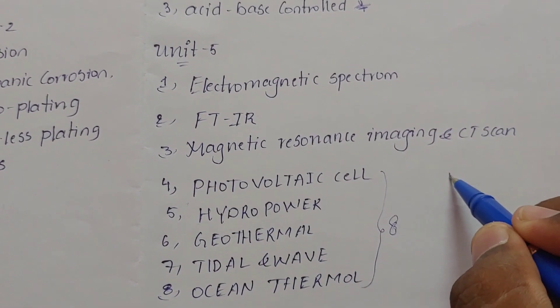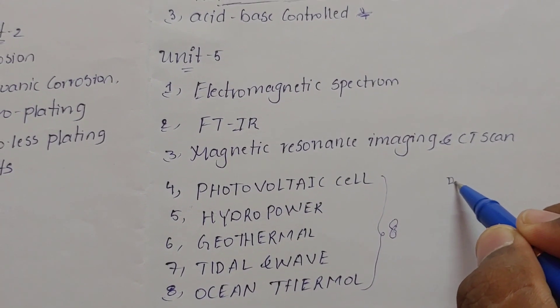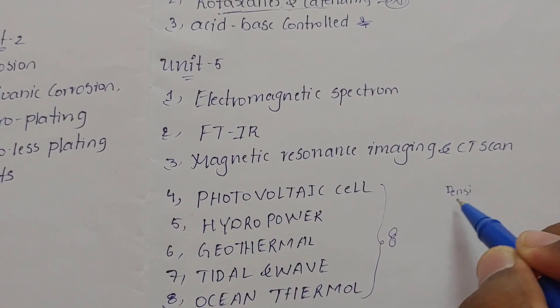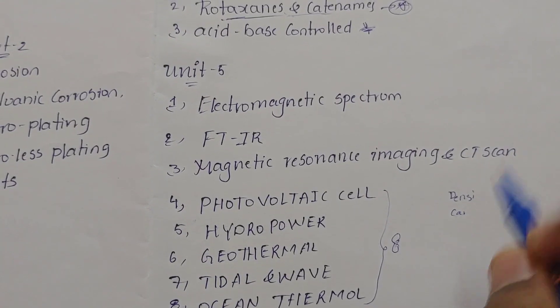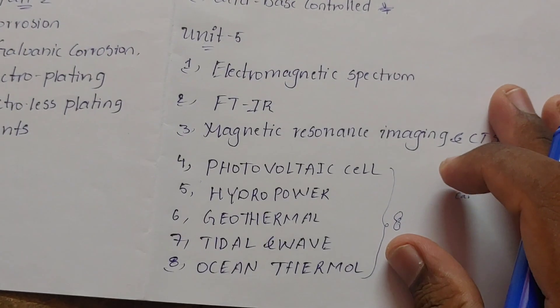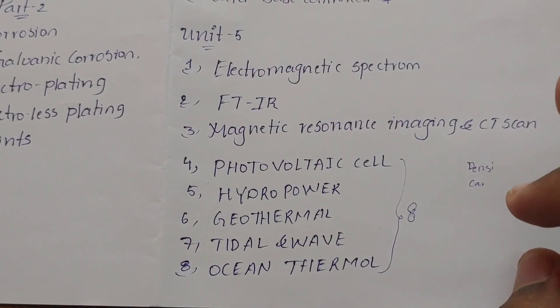The main important thing is that diagrams must be drawn using pencil and scale. Pencil and scale are used in chemistry because it creates a good impression and you can get better marks.